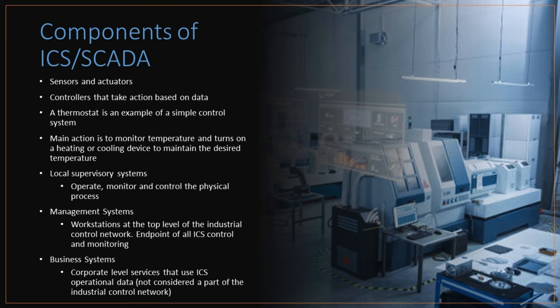Let's talk about the components of SCADA systems. An example of the important measurement components are sensors and actuators, which work together as the sensor receives a signal and the actuator performs an action. Essentially, these are sensors that report data to the controller and adjust based on the programming. Think of a thermostat as an example of a simple control system. Its main purpose is to monitor the temperature in a space, and then turns on a heating or cooling device to maintain a desired temperature. Local supervisory systems are systems that operate, monitor, and control the physical processes. They use Windows OS, but often simpler touchscreen systems.